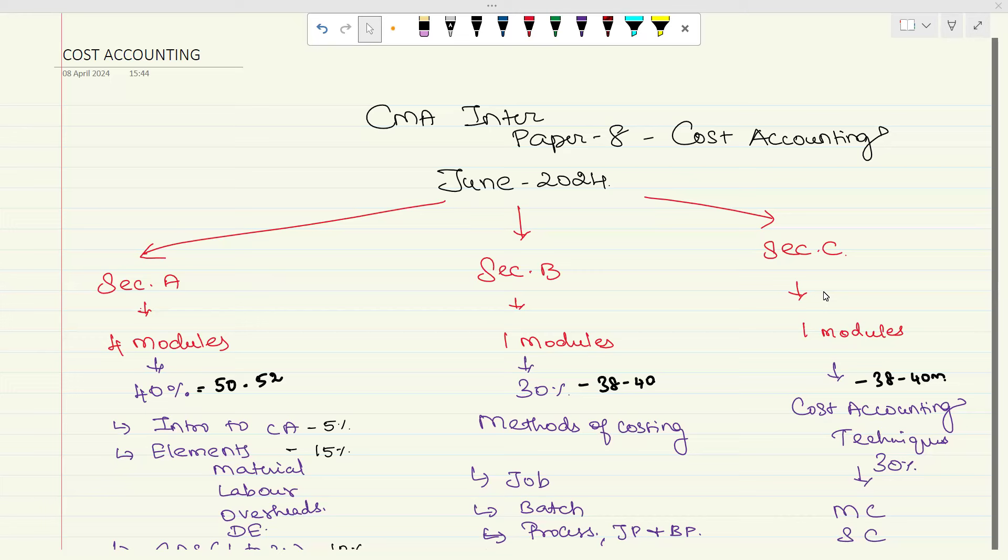If you see the cost accounting paper for the CMA, it is a key paper. Many students are feeling difficulty while some students are scoring very good marks. It depends from person to person, but this paper is an exemption paper. Every paper will be an exemption paper if you follow a proper strategy with proper guidance and a proper mentor. You can easily clear it.